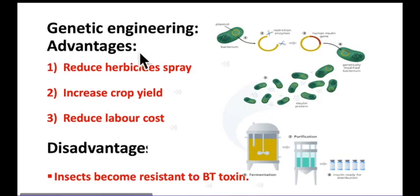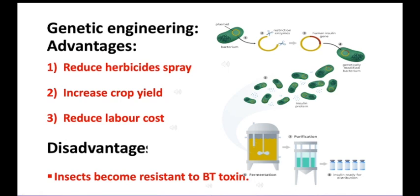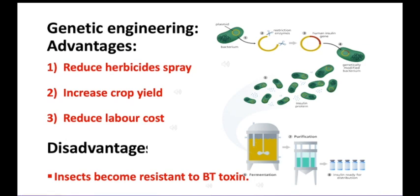Now let's discuss the advantages and disadvantages of genetic engineering. Advantage one: it reduces herbicide spraying — growing GM crops resistant to herbicides reduces the number of times farmers need to spray, and reduces the occasions on which herbicides might harm nearby plants. Advantage two: it increases crop yield, because the spray is very effective at killing everything other than the crop plant. Advantage three: it reduces labor costs, meaning cheaper food.